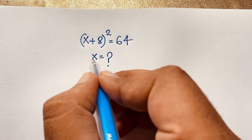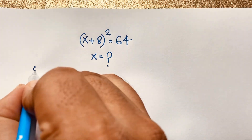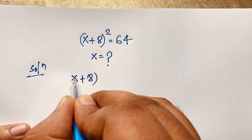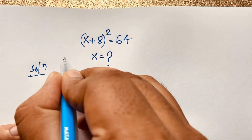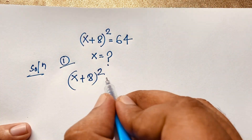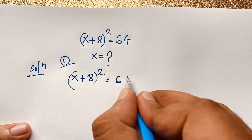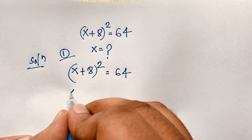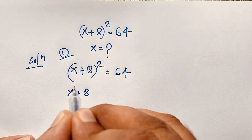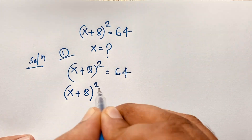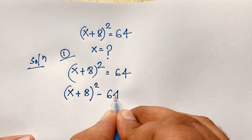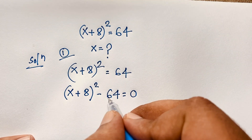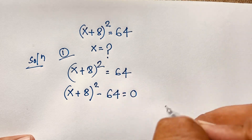Here is our question: (x + 8)² = 64. I will solve this question using two methods. For the first method, I move 64 to the left side: (x + 8)² − 64 = 0.